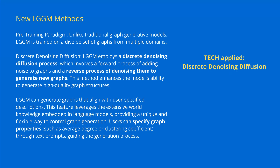Let's have a look at the methodology they used. The pre-training paradigm was simple. Unlike traditional graph generative models, they trained it on a diverse set of graphs from multiple domains - this is the most important thing to remember. Now we have multiple-domain pre-training. The technology applied is a discrete denoising diffusion process, which involves a forward process of adding noise to graphs and a reverse process of denoising them to generate new graphs.